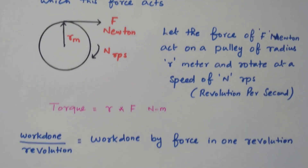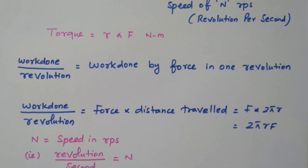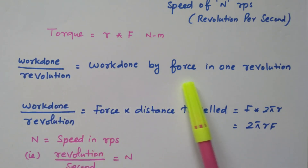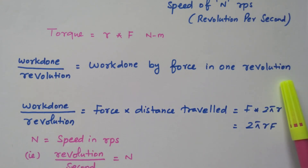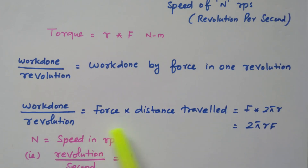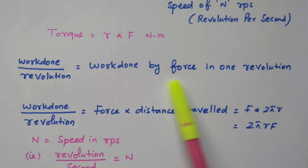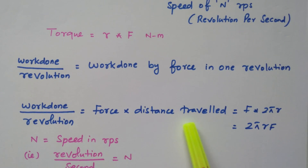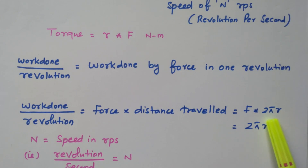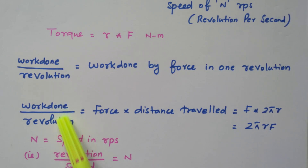Now we will see the work done per revolution. Our aim is to find the general equation for torque. Work done per revolution equals work done by force in one revolution, which is force into distance travelled. The distance travelled in one full revolution is 2πR — the circumference — so work done per revolution equals 2πRF.